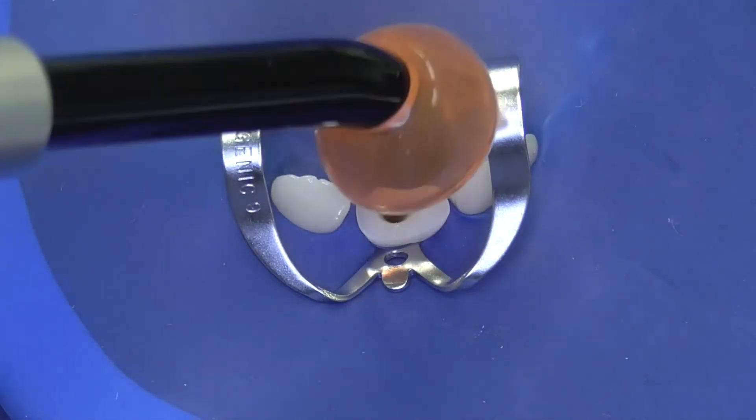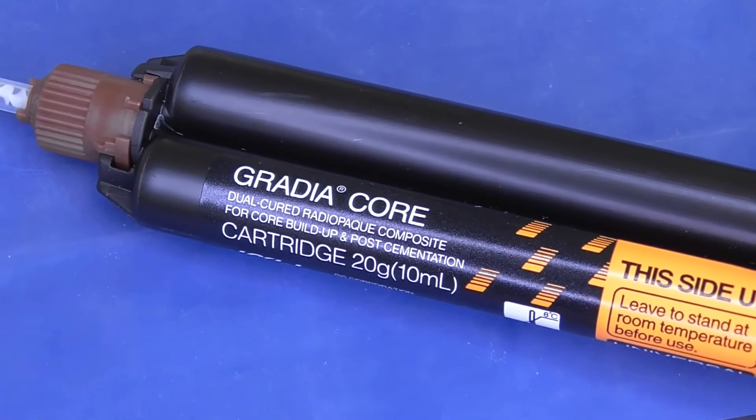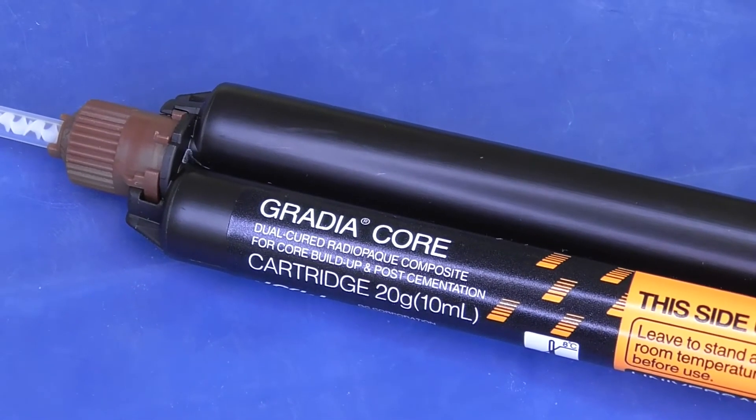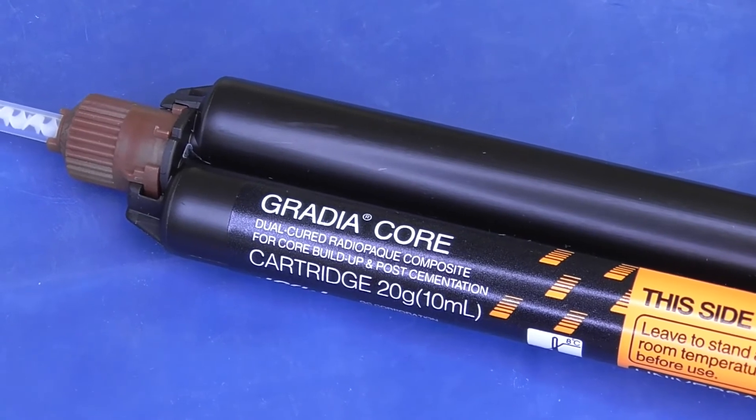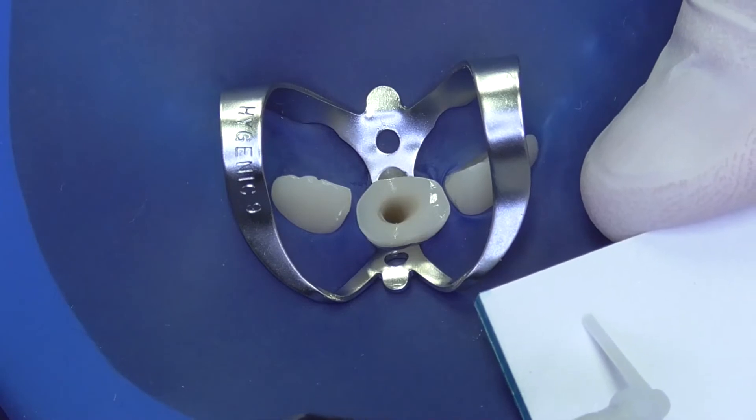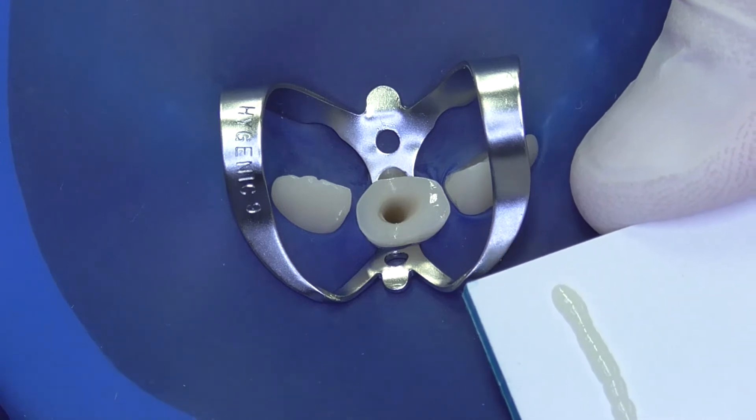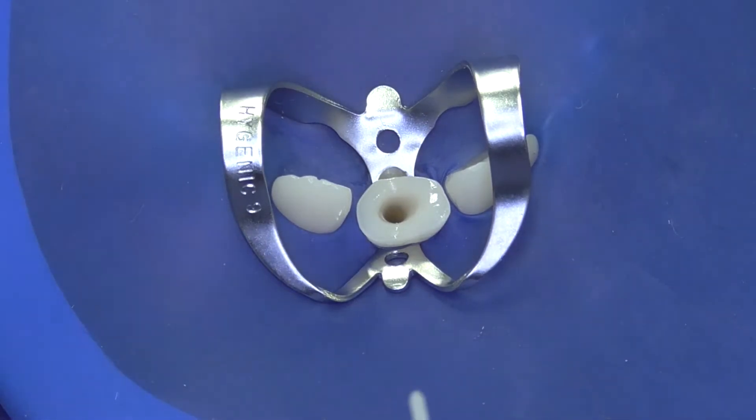In this case, we are cementing the post with Gradia Core, a core buildup composite resin. This dual curing resin composite has suitable properties for cementation. The Gradia Core material will be syringed to the root canal.